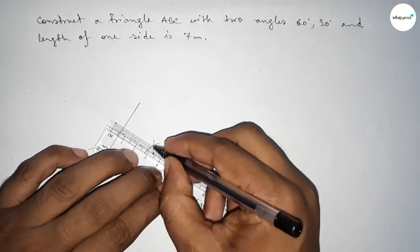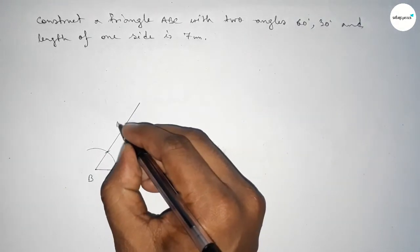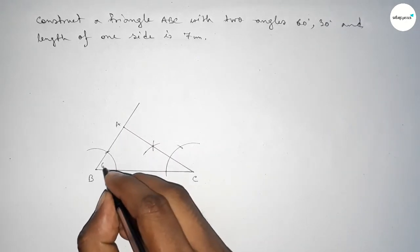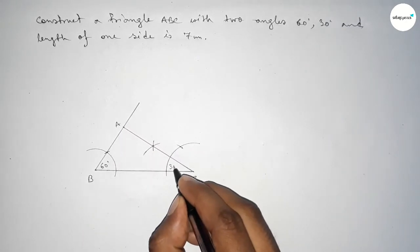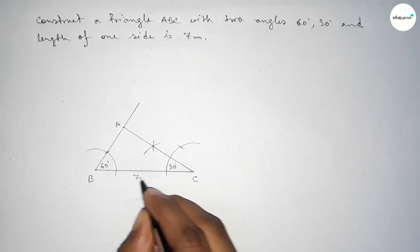And both the lines intersect at a point A. So this angle is 60 degrees, this angle is 30 degrees, and this side is 7 centimeters.